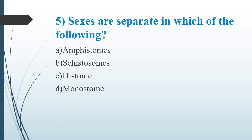Fifth question: Sexes are separated in which of the following? Option A, Amphistomes. Option B, Schistosomes. Option C, Distomes. Option D, Monostomes. Answer is Option A, Amphistomes.